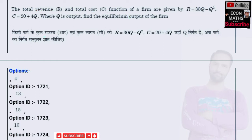So what we are being given: revenue is R = 30Q - Q², this is the revenue function, and the cost function is C = 20 + 4Q.